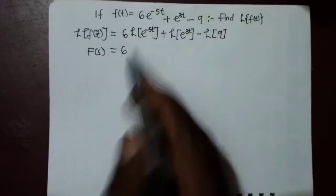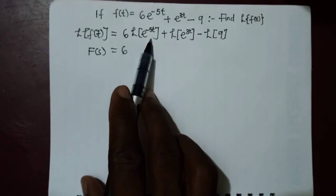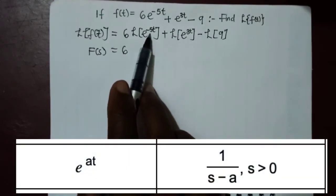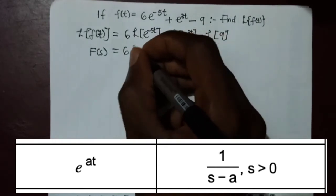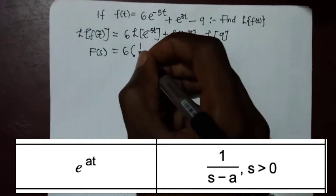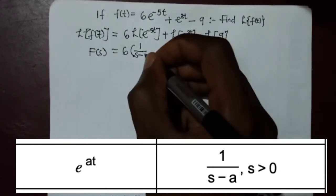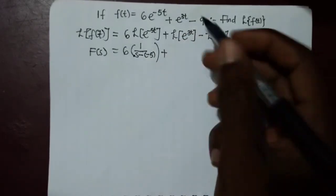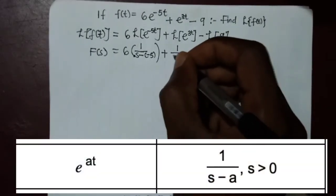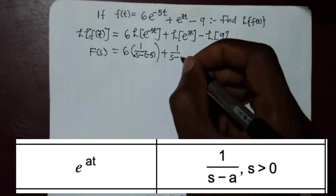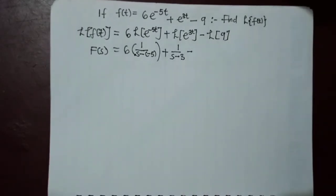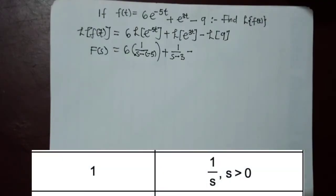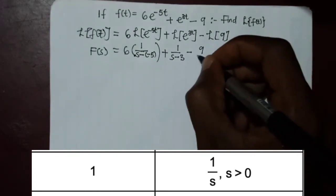For e^(−5t), this corresponds to the Laplace transform of e^(at) where a = −5, giving 1/(s − a) = 1/(s − (−5)). For e^(3t), the same formula applies with a = 3, giving 1/(s − 3). From the first formula, the Laplace transform of 1 is 1/s, so the Laplace transform of a constant is the constant divided by s — here 9/s.